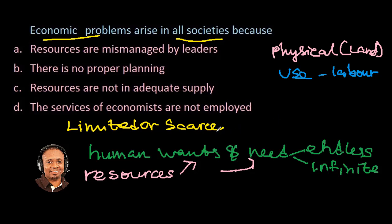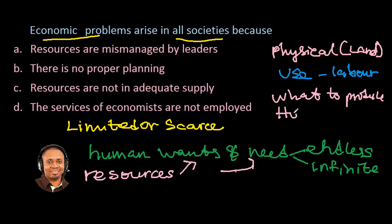And so to solve this problem of scarcity in every society — big or small, developed or not — there are three basic questions that we can apply. These questions are: What to produce, How to produce, and For whom to produce.